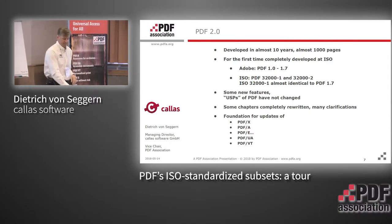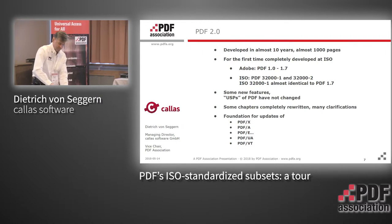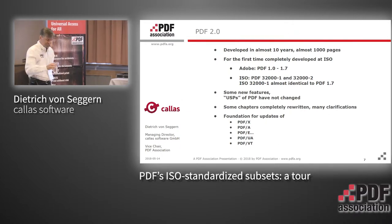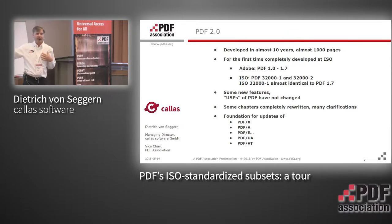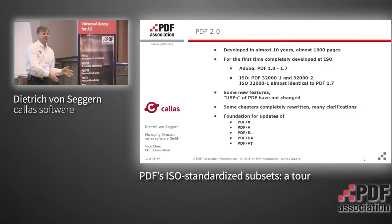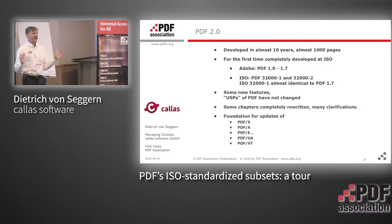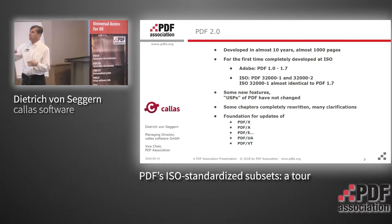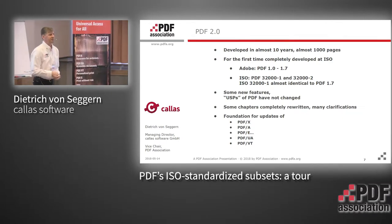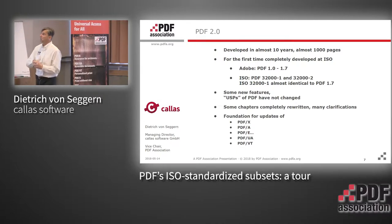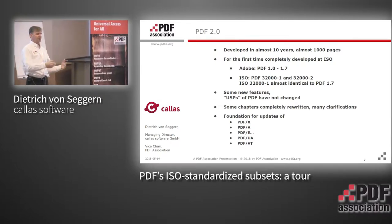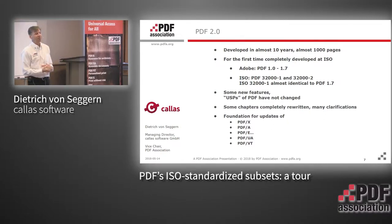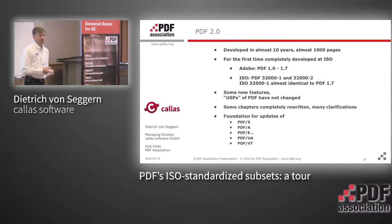One quick thing: members of the PDF Association have access to the standards only before they become officially published as standards. After that, you're like everyone else — you have to pay for your copy. The business model of ISO is that submitting stuff into the committees is open to many people, but they make money by selling standards. Every expert provides information to ISO for free, but ISO needs to make money to finance their organization and staff, and that comes from selling standards.